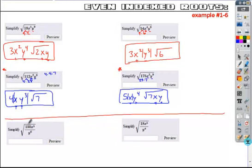So the square root of 150, 150 is 25 times 6. So the square root of 25 comes out as a 5. The 6 stays inside the radical.